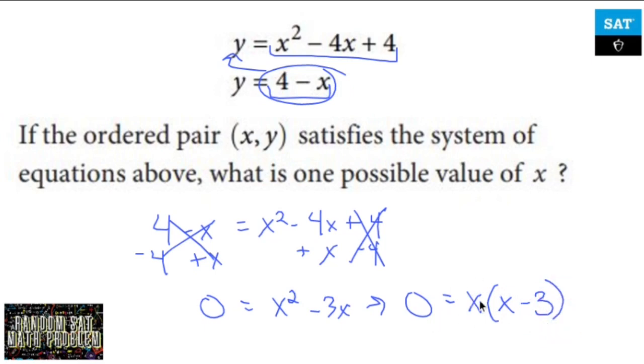Zero product property says that if I have zero equal something times something, make each of those things zero. So I have x equals zero and x minus 3 equals zero, which means if I add three to both sides, here's one of my answers.